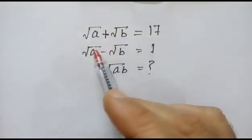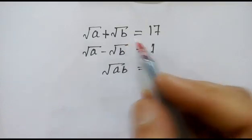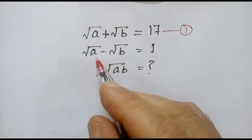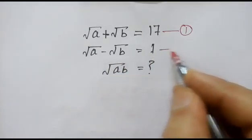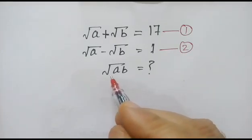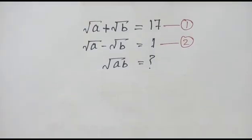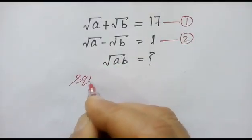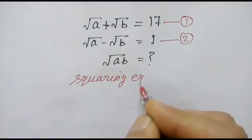Hi friends, we have given two equations: square root of a plus square root of b equals 17 — equation number one; square root of a minus square root of b equals 1 — equation number two. We have to find the value of square root of ab.